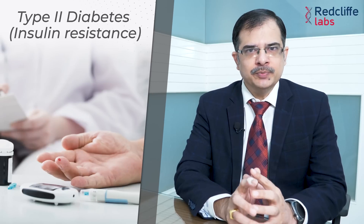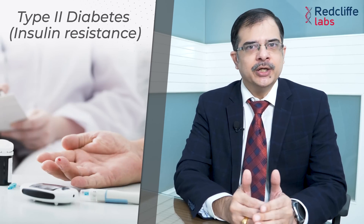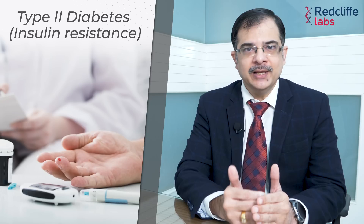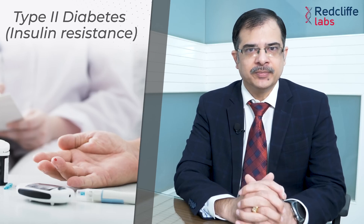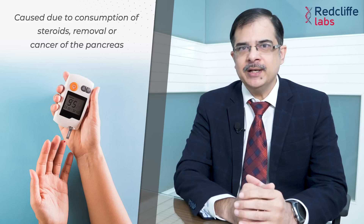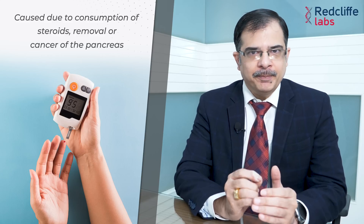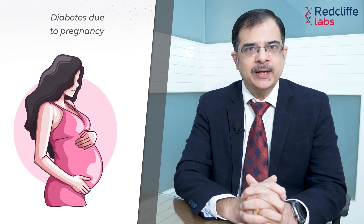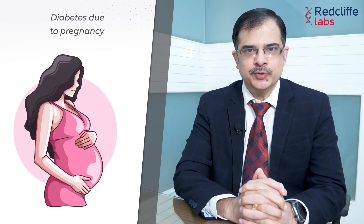Type 2 diabetes mein multiple defects hote hain — insulin ban bhi kam raha hai, aur jo ban raha hai woh kaam nahi kar raha, jise hum insulin resistance bolte hain. Teesre type mein koi na koi karan hota hai, jaise ki steroid lena, ya phir pancreas ki surgery se pancreas remove ho jana, ya pancreas ka cancer. Aur 4th tarike ka hota hai pregnancy ki wajah se diabetes hona.